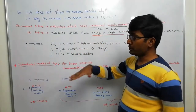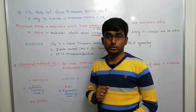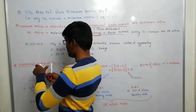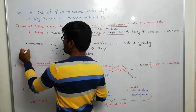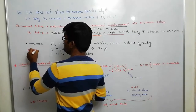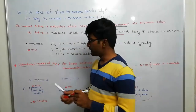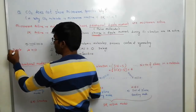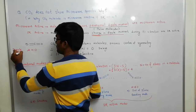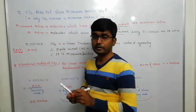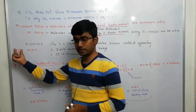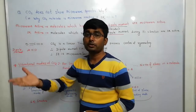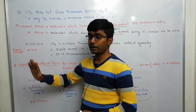CO2 is a non-polar molecule. Why is it non-polar? The dipole moment of the CO2 molecule, mu, is equal to 0. Dipole — 'di' means 2 — so 2 poles, meaning there is a separation of positive and negative charges.